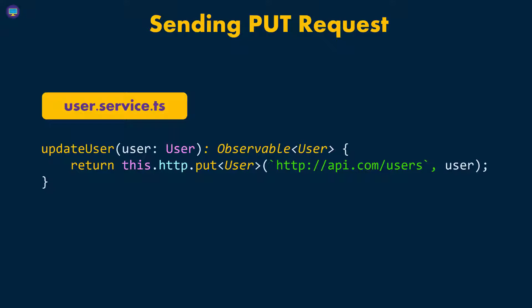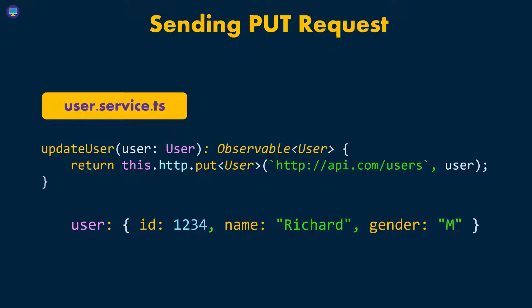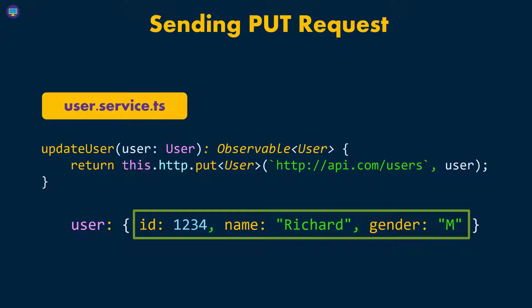Now, one thing you have to know is whenever you're sending a PUT request, you have to send the entire data. For instance, if our user looks like this — remember earlier we had the name as Junior, but now we have Richard. So if we're sending this data and we want to change the name to Richard, we have to send the entire data. As you can see here, I'm passing in the ID, the new name which is Richard, and then the gender.